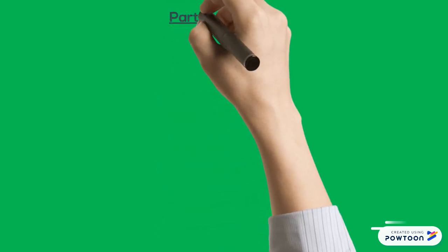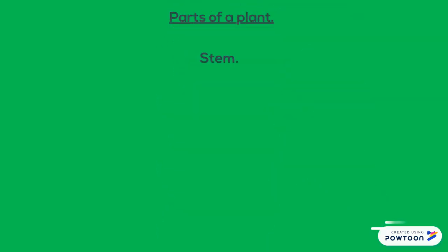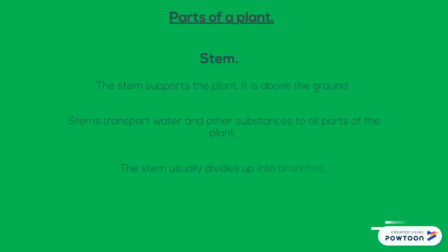A different part of the plant is the stem. The stem supports the plant; it's above the ground. Stems transport water and other substances to all parts of the plant. The stem usually divides itself up into branches.